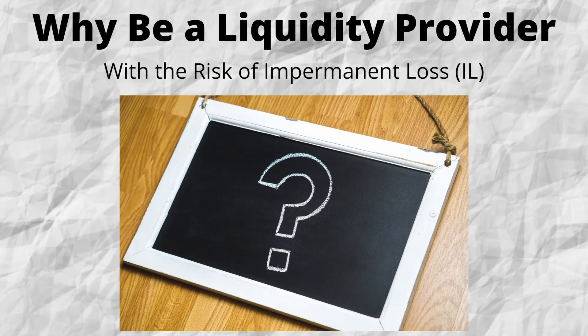So why do it? Why become a liquidity provider if I'm exposed to the risk of impermanent loss? Automated market maker platforms like BEPSWAP need liquidity providers to operate, so they make it very lucrative by giving them a good share of the fees, sometimes offering additional network benefits, and some even provide tokens for providing liquidity which also have value. It is a risk many are willing to take as there are handsome rewards on offer. However, the more the price moves, the more impermanent loss becomes an issue, and impermanent loss can be greater than the income generated. When price movements are small, generally the income generated is more than enough to cover impermanent loss. But when price movements are very large, it may not be.